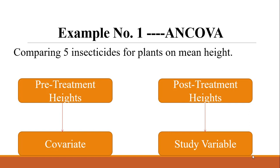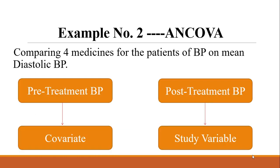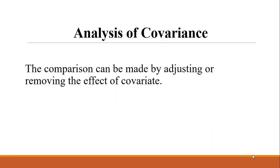A second example is comparing four types of medicines for patients with high blood pressure, where mean diastolic blood pressure is the study variable. This post-treatment blood pressure may have a relationship with the pre-treatment blood pressure. The pre-treatment blood pressure is called the covariate, and we must adjust or remove its effect before the analysis. The technique that handles this is called analysis of covariance, which allows comparison by adjusting for the effect of the covariate.